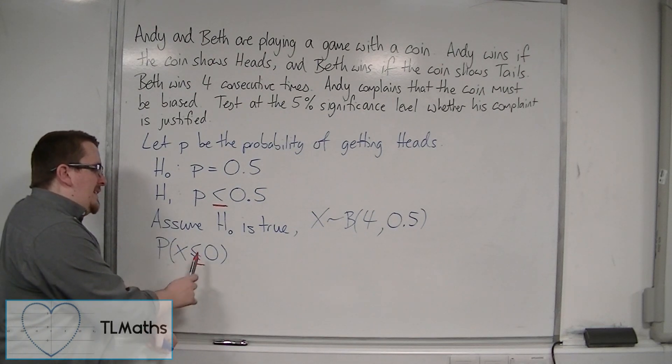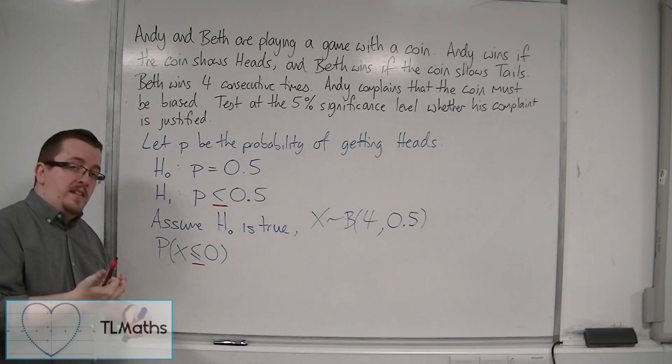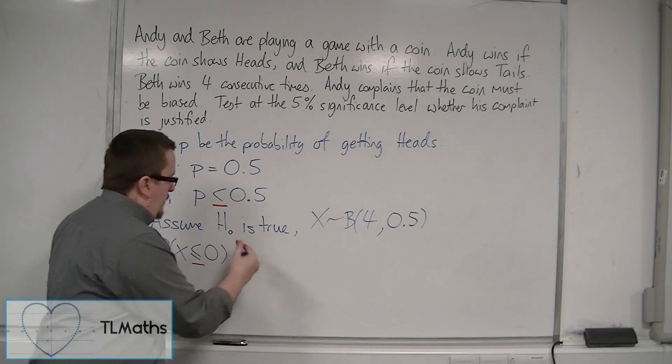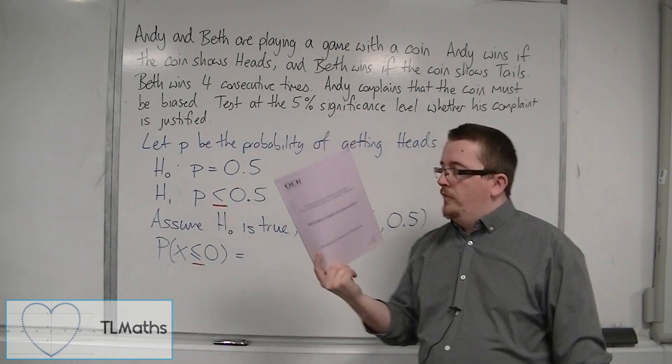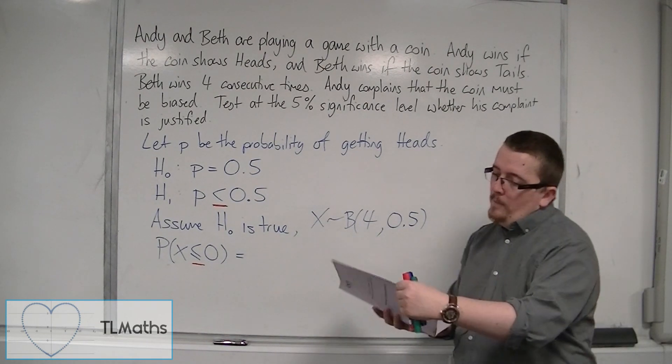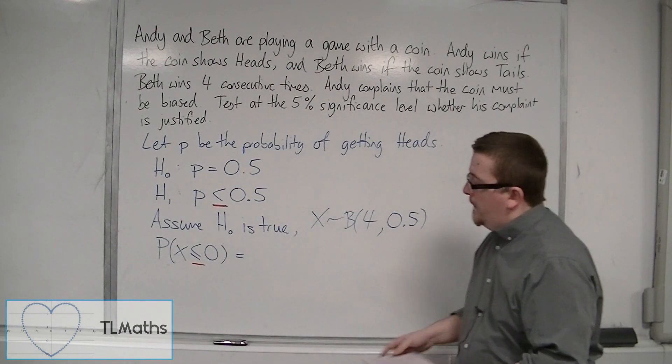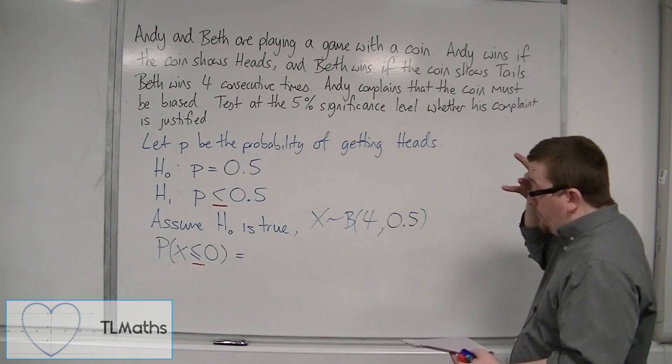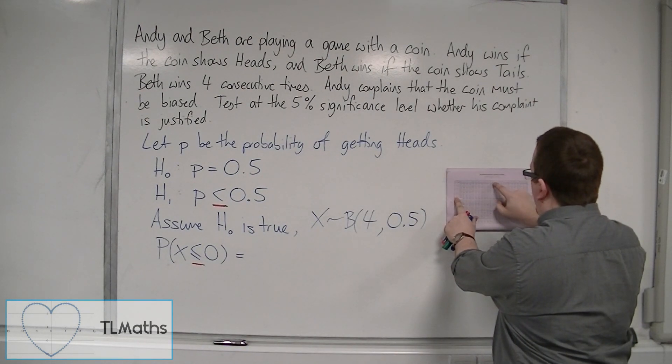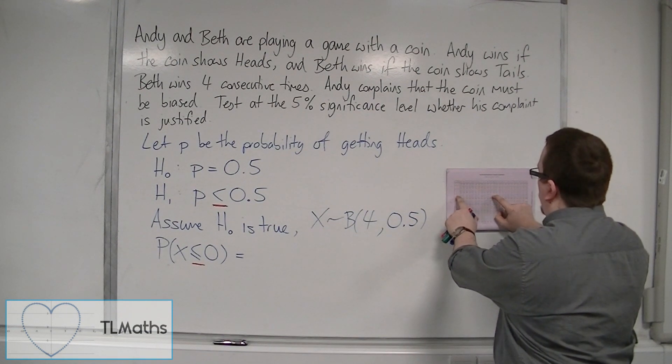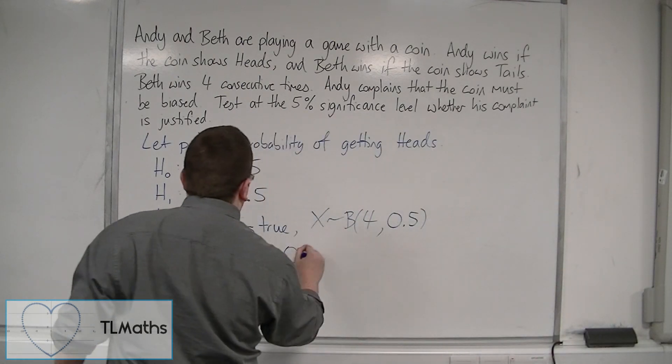So probability of X being less than or equal to 0 is a probability that I can calculate either using the formula, but I'm going to go straight to the tables. So we get our formula booklet, and we're going to go to the binomial distribution tables that are in the back of the book. So this is on page 12. So we're going to go down to n is 4, and then the probability of 0.5, and we're looking at where X is 0. So that would be 0.0625.